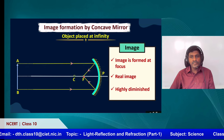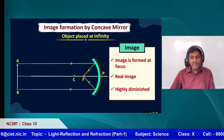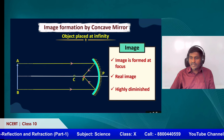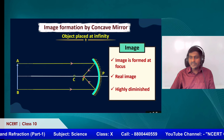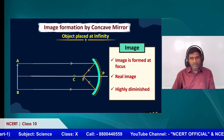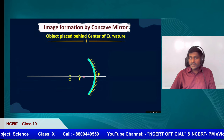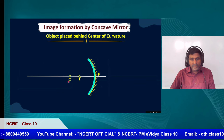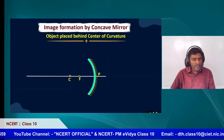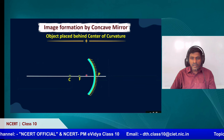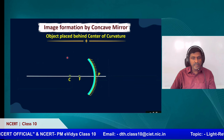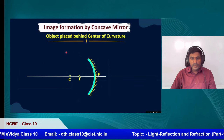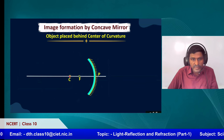So if a question asks what happens when an object is placed at infinity in a concave mirror, you can explain the nature of the image and how it is obtained by drawing this ray diagram. Next, we can see what happens when an object is placed beyond the center of curvature C.